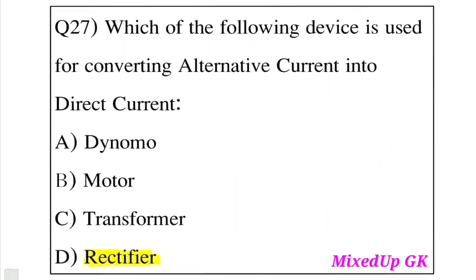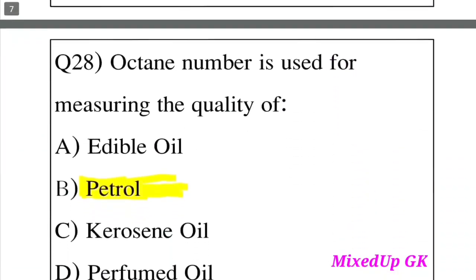Question 27: Which of the following devices is used for converting alternating current into direct current? Option A: Dynamo. Option B: Motor. Option C: Transformer. Option D: Rectifier. The answer is Option D, Rectifier. A dynamo converts mechanical energy to electrical energy, while a rectifier converts AC to DC.